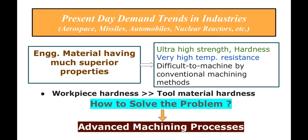This problem caused the manufacturing era to start thinking about evolving new manufacturing processes. The result was the development of advanced manufacturing processes over a period of time. The important thing is that work piece hardness does not matter in advanced machining processes — hardness, which is a barrier in conventional machining, is no longer a barrier.